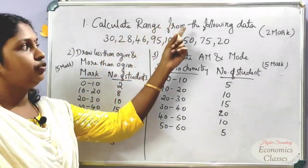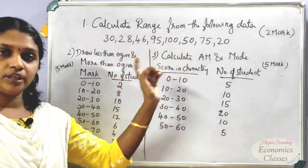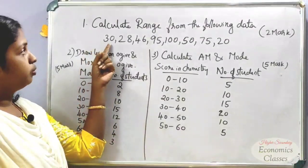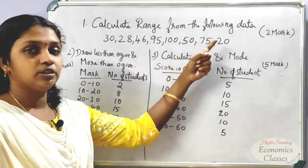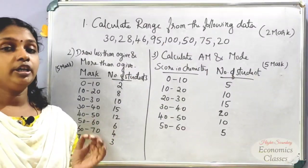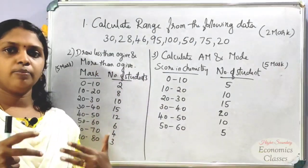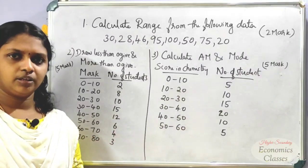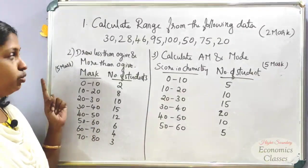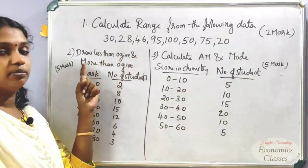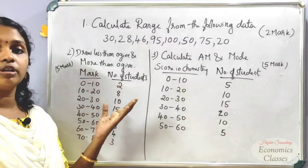First question: Calculate the range from the following data. In this individual series, the values are 30, 28, 46, 9, 5, 5, 5, 6, 6, 7, 7, 7, 8, 8, 9, 10, 9, 10. Also, draw a less-than and more-than ogive schedule.